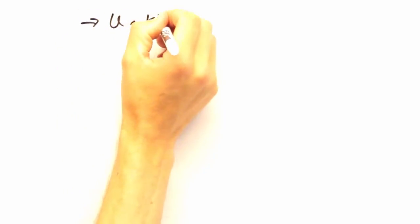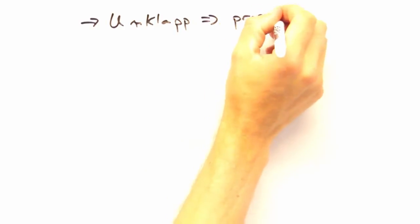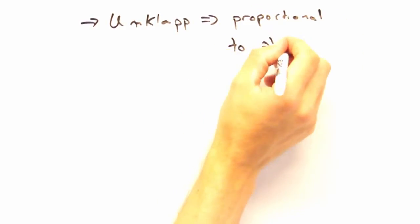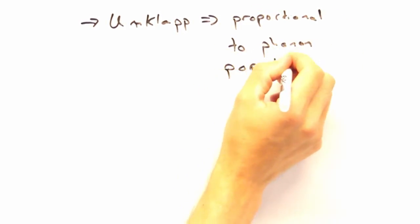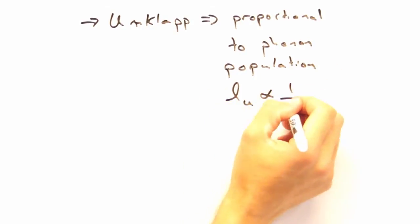Well, that would depend on temperature, right? Because at high temperatures, I would expect that there are so many phonons that Umklapp scattering is going to be the dominant contributor. And since this effect depends on phonon population, I'd expect L from Umklapp scattering to go roughly inversely with T.